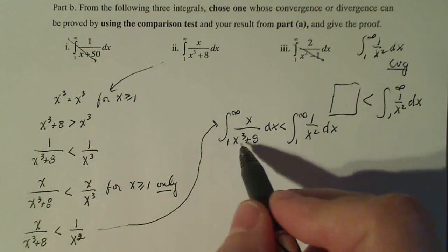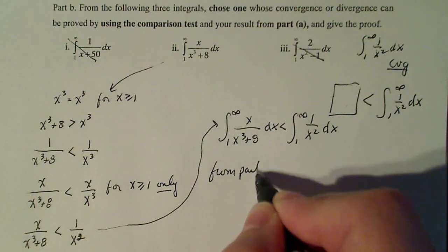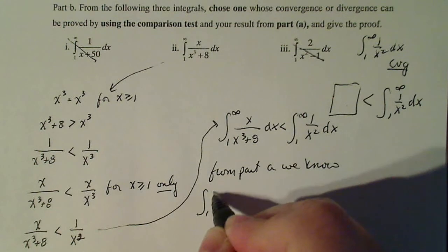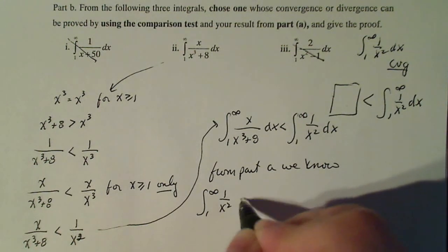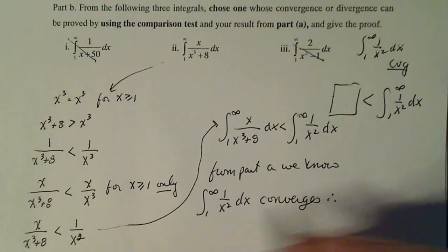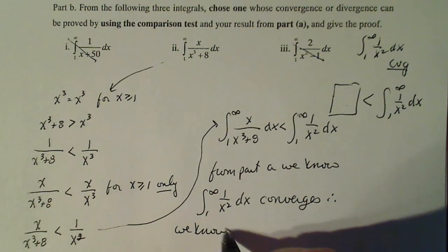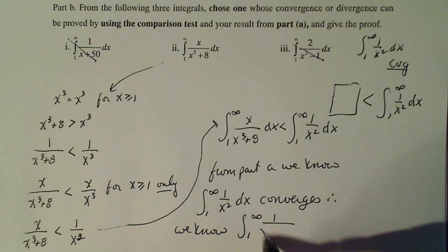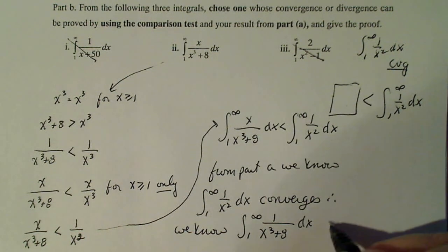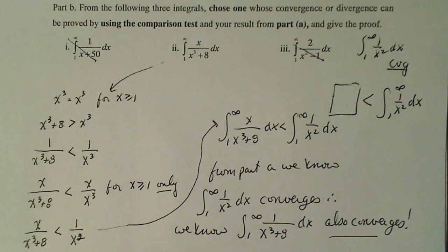I know that this integral is less than that integral. From part A, we know the integral from one to infinity of one over x squared dx converges. Therefore, we can say or we know the integral from one to infinity of x over x cubed plus eight dx also converges. That's how that works.